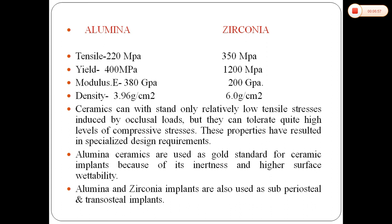Regarding other properties: tensile strength of alumina is 220 megapascals; for zirconia it is about 350 megapascals. Flexural strength is 200 megapascals for alumina; for zirconia it is 200 megapascals. Modulus of elasticity is 380 gigapascals for alumina; zirconia is 200 gigapascals. Density of alumina is 3.96; zirconia is 6.0. Ceramics can withstand only relatively low tensile stresses induced by occlusal loads, but they can tolerate quite high levels of compressive stresses. Aluminous ceramics are used as the gold standard of ceramic implants because of their inertness and higher surface wettability. Aluminous and zirconia implants are also used as subperiosteal and transosteal implants.